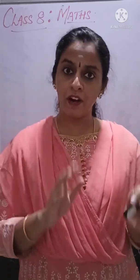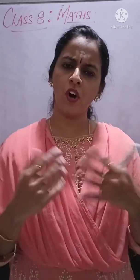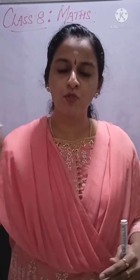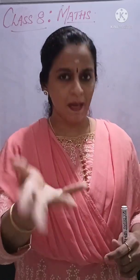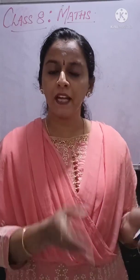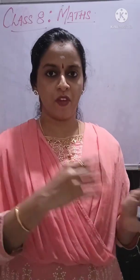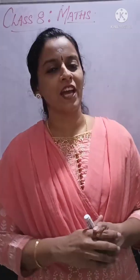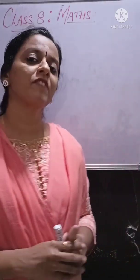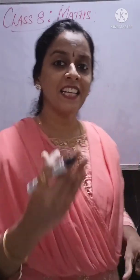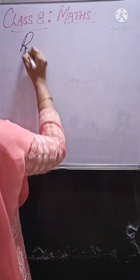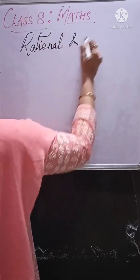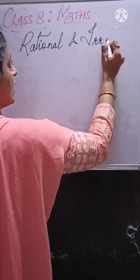You have to maintain a 200-page notebook or long book — that is your choice. As we discuss, we will be solving sums together, and 2 or 3 sums I may give you as homework, which you can try based on the previous sums. So with a positive note, let us start our 8th Standard journey together. The first chapter we are going to deal with is Rational and Irrational Numbers.